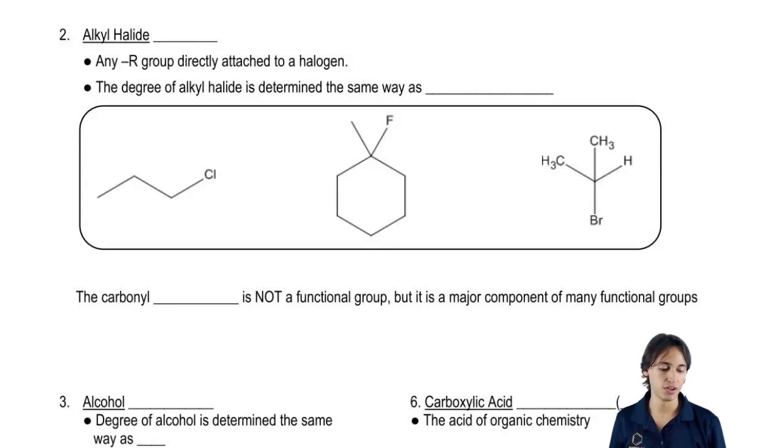Alkyl has to do with carbon, so that would be an R. Remember that I said R can be used for any carbon group, and halide is a halogen. Remember that the letter we use for halogen is X. So the abbreviation for an alkyl halide is RX.